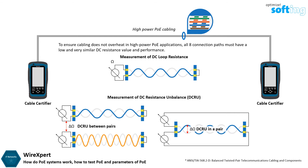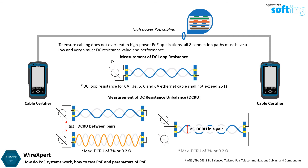For example, the ANSI TIA 568.2 standard specifies that in order to be compliant for PoE delivery, the DC loop resistance for a Cat 3, 5E, 6, and 6A Ethernet cable shall not exceed 25 ohms. There can only be a maximum DC resistance unbalance of 7% or 0.2 ohms between pairs, and a maximum DC resistance unbalance of 3% or 0.2 ohms within a pair of wires.